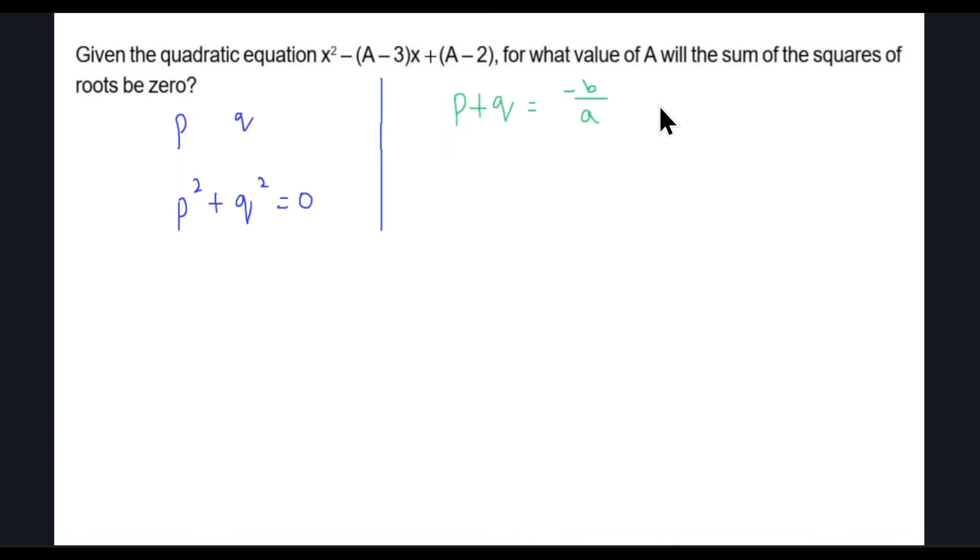But definitely there is a direct formula for the sum of the roots P plus Q, which is given by negative B over A. If the quadratic is AX squared plus BX plus C, then the sum of the roots will be negative B over A. So in this case, P plus Q is negative of A minus 3, and A is 1. So P plus Q will be A minus 3. Let's square both sides.